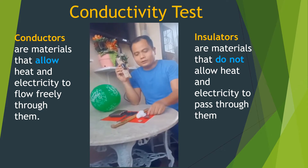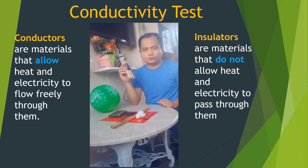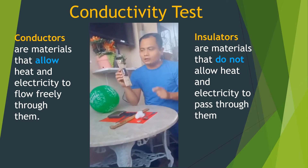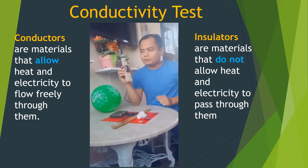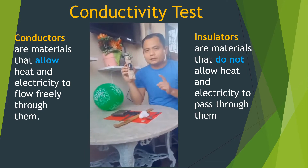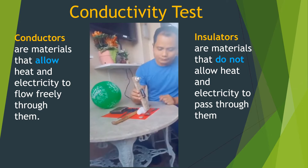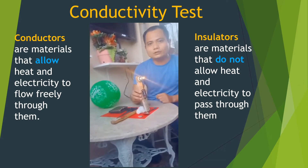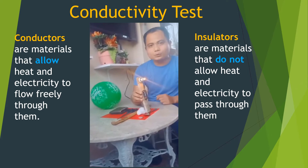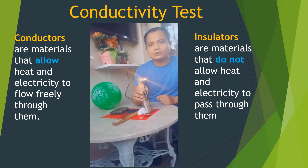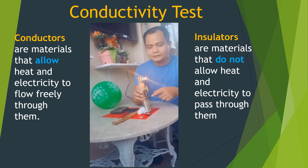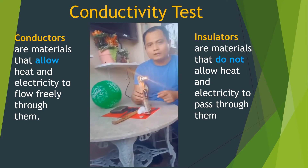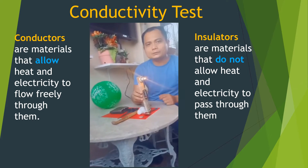Let's start by testing the metal spoon. If the light bulb turns on, the material is a conductor. As you can see, the light bulb turns on — so the metal spoon is a conductor. It allows electricity to travel through it.